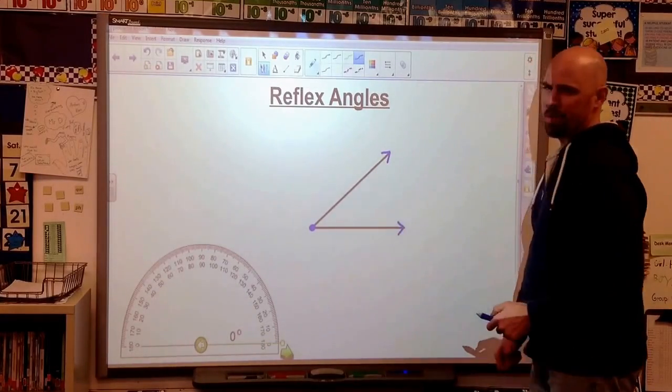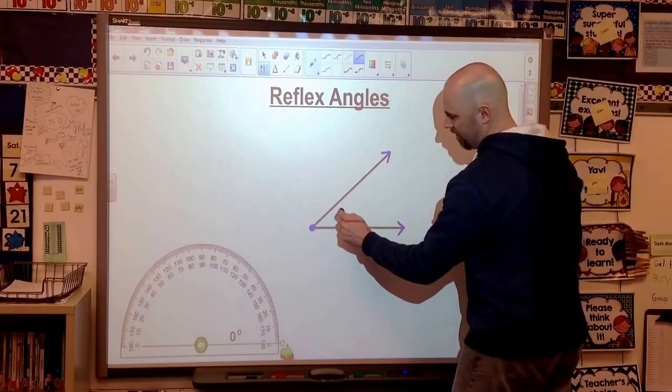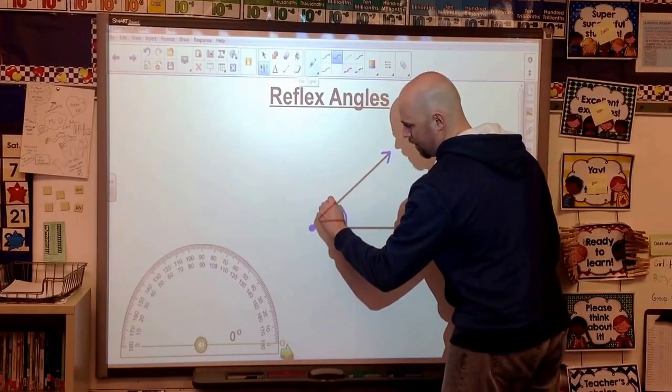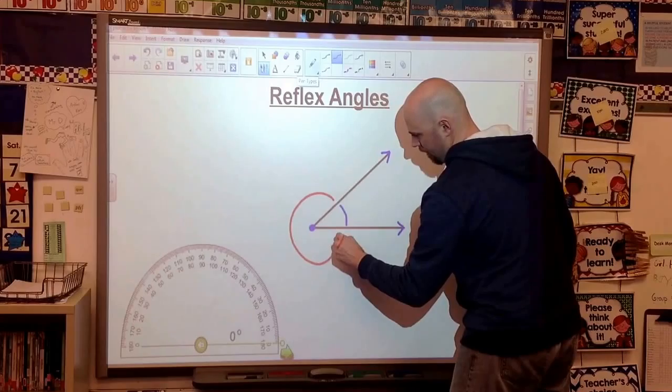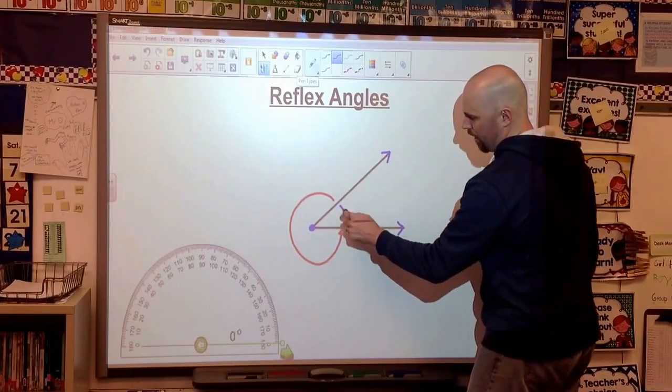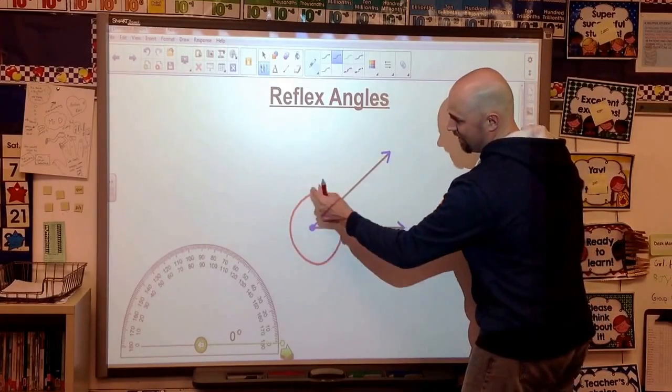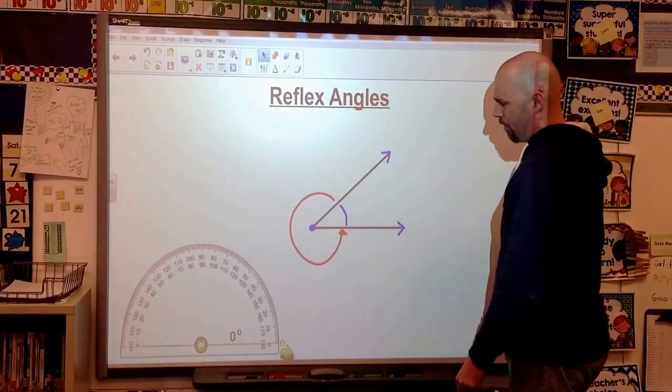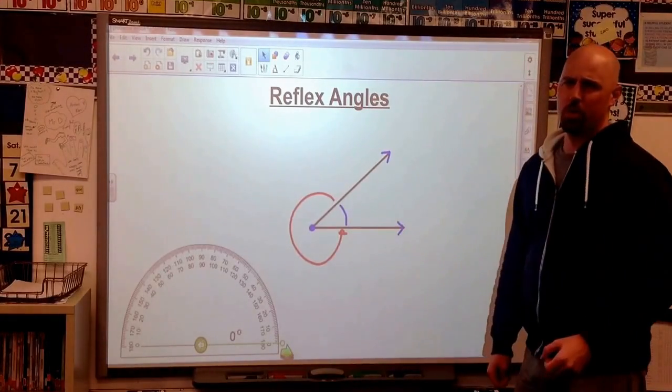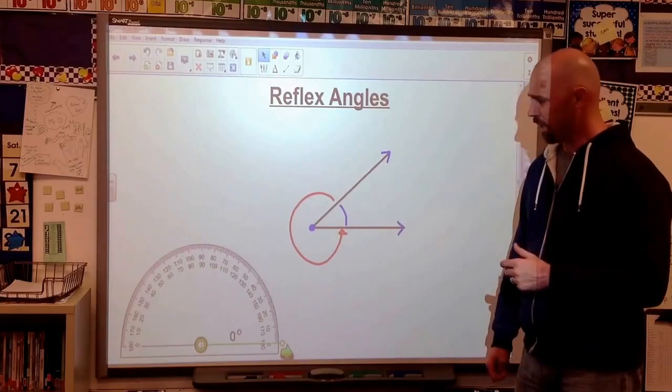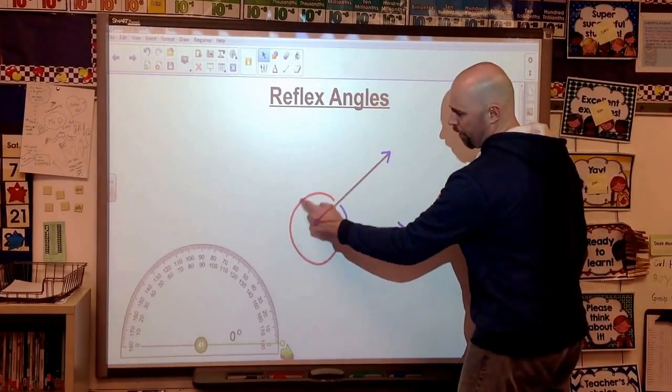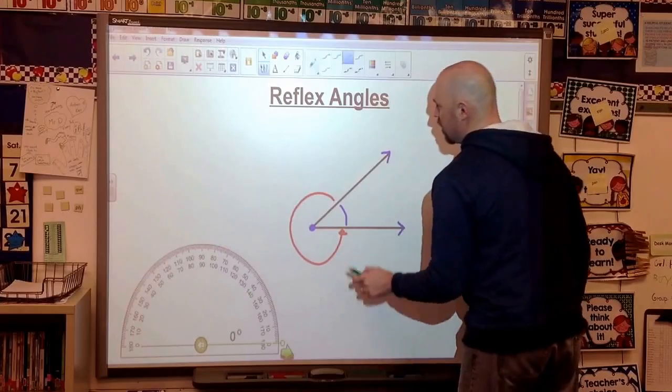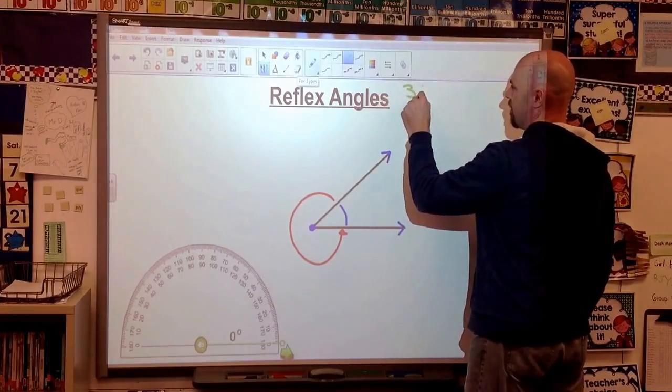The only difference between that reflex angle and the acute angle is instead of doing this inside blue line, I'm measuring the outside. I don't want to know how wide this is. I want to know how wide this is all the way around, if I swung that all the way around here. Well, we're going to use what we know about circles to complete this. We know that if we go all the way around, if I could add this red line with this blue line, it should add up to 360 degrees.